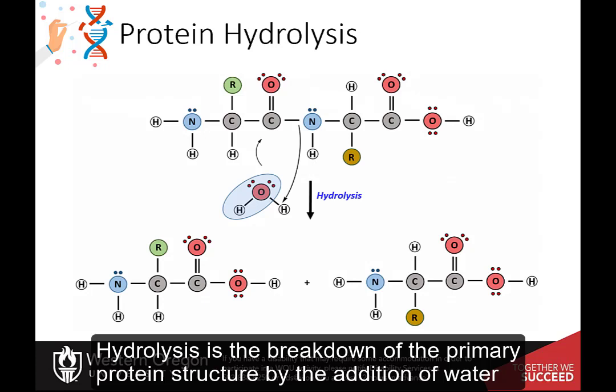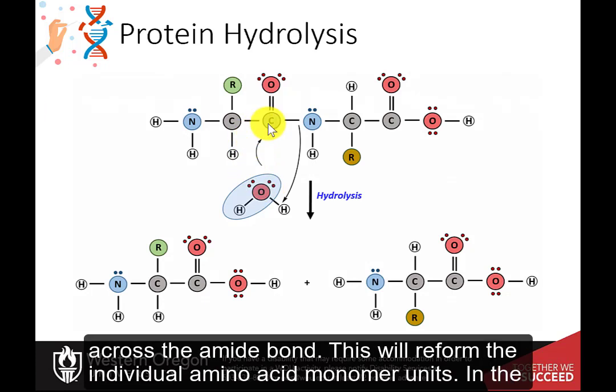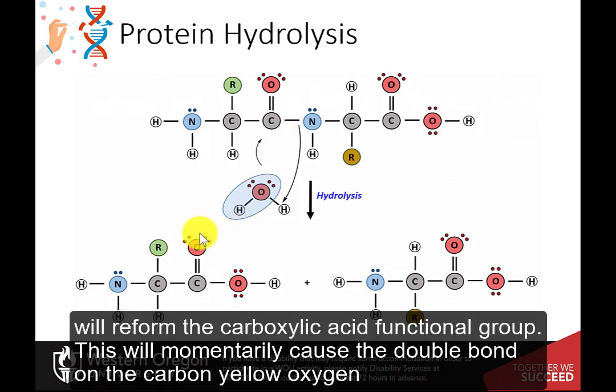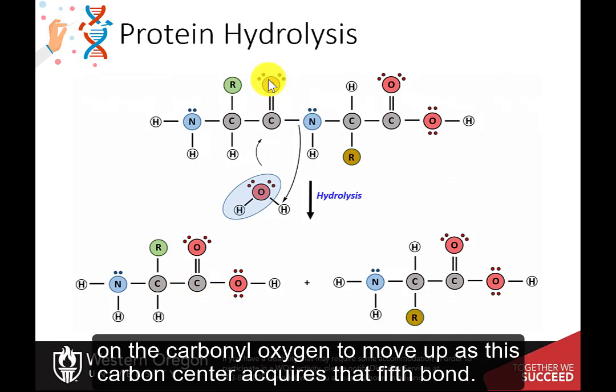Hydrolysis is the breakdown of the primary protein structure by the addition of water across the amide bond. This will reform the individual amino acid monomer units. In the hydrolysis reaction, the oxygen of the water molecule attacks the carbonyl carbon and will reform the carboxylic acid functional group. This will momentarily cause the double bond on the carbonyl oxygen to move up as this carbon center acquires that fifth bond.